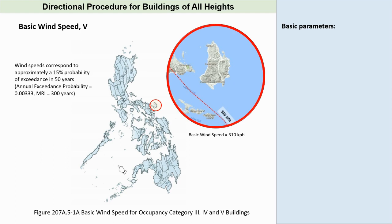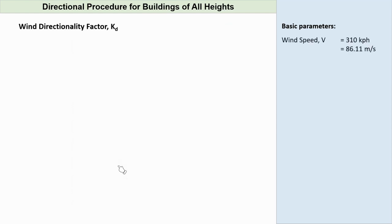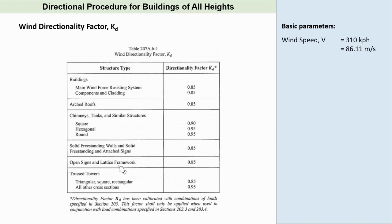Now we have basic wind speed. Let's take a note of this value. Next parameter is the wind directionality factor, KD. The value of KD is already given in Table 207A.6-1 of the code. The structure is a building structure and we're into MWFRS, therefore the value of KD will be 0.85.